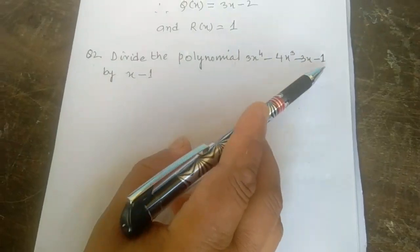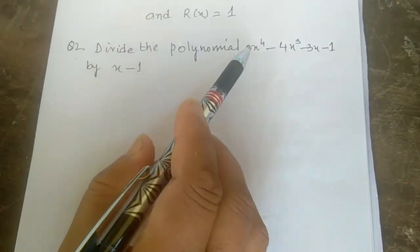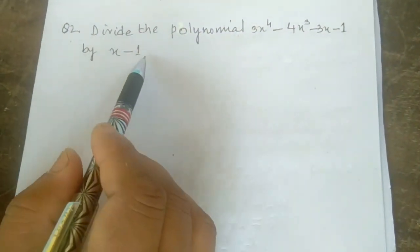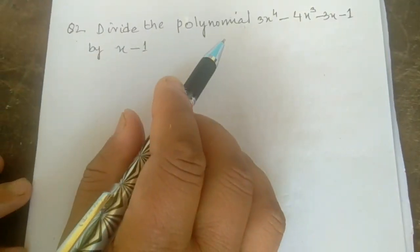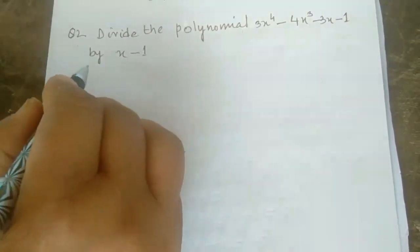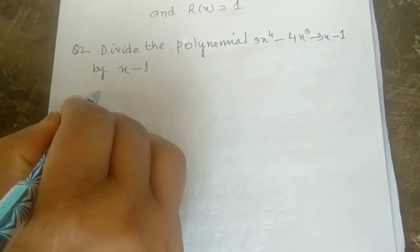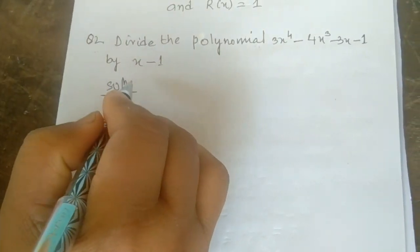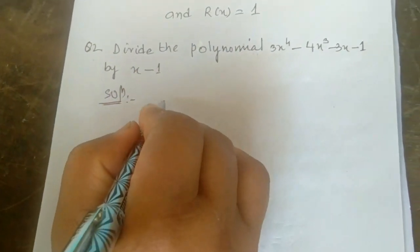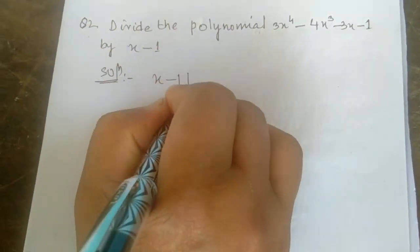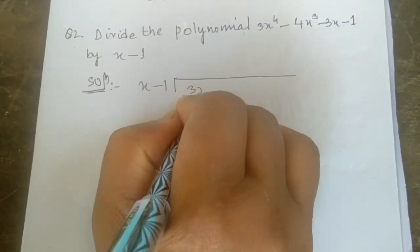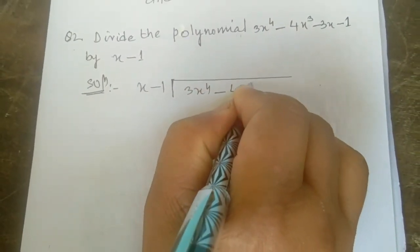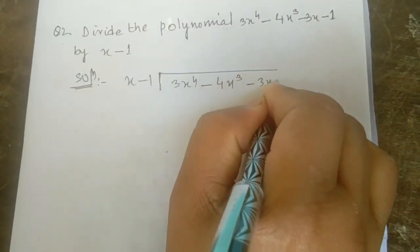Question number 2: Divide the polynomial 3x⁴ - 4x³ - 3x - 1 by x - 1. Again let me show you the long division method. Solution: from x - 1, divide 3x⁴ - 4x³ - 3x - 1. It is already arranged, so no need to rearrange — just write it as is: 3x⁴ - 4x³ - 3x - 1.